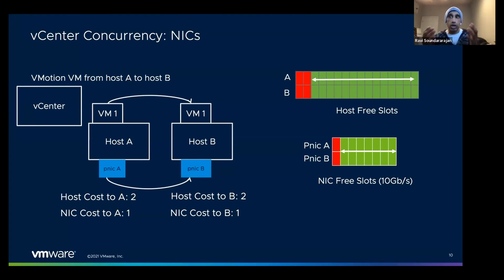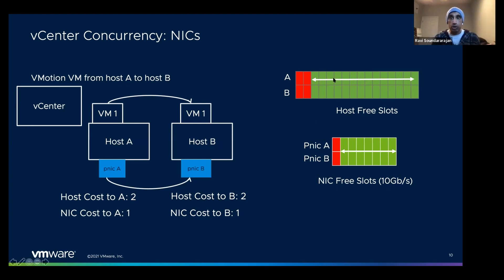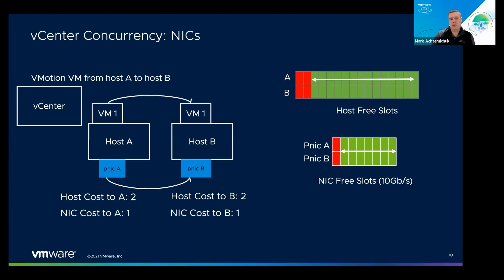Where this gets interesting is when you're doing both a clone and a vMotion simultaneously. For the clone you're concerned about the host cost; for the vMotion you're concerned about both the host cost and the NIC cost. Overlaying all of those gives you an estimate of how many operations you can actually do at once. This is why operations start to queue up — we have to think about each resource and each gate for those resources.